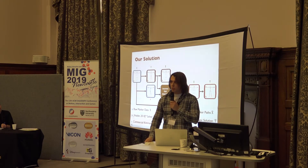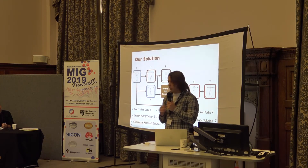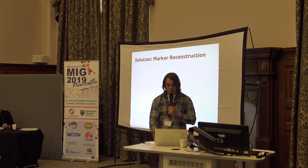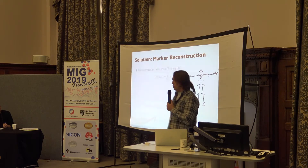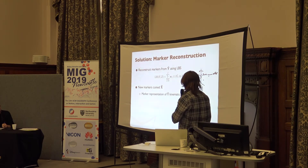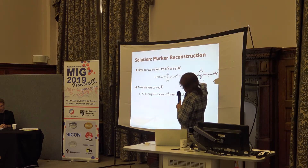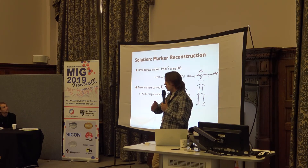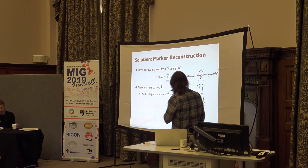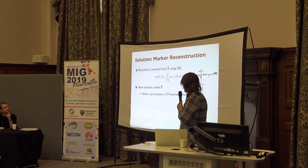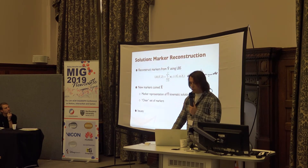Now I'll go into detail on some of the processes. For marker reconstruction, we use linear blend skinning to reconstruct the markers — you can think of this as vertices on a mesh. We have a whole dataset of joints compared to markers and can get the weights from there. These new markers point at X-hat and represent the correct kinematic solution in marker space.